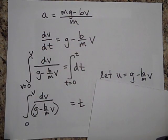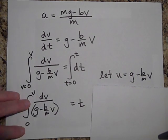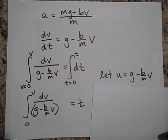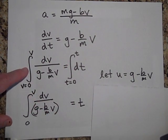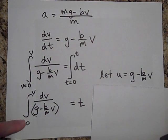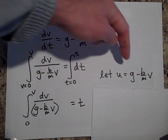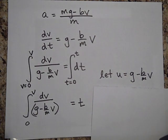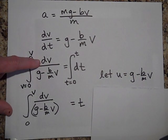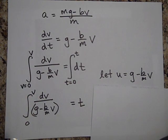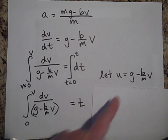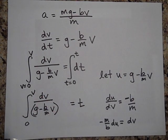I brought the dt over to the other side because I'm going to integrate this. When I integrate, the dt goes to just t. I'm ready to do integration by substitution, letting u equal this expression. When I do that, I have to change dv to du — I can't take the integral of u with respect to v, I have to do it with respect to du.